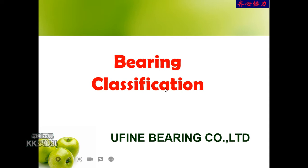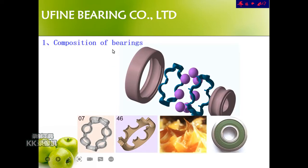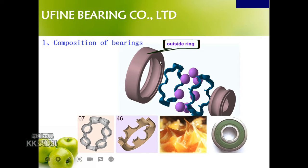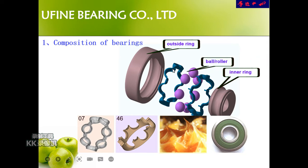Now let's check the bearing classification. First, the composition of bearings. As we can see from this image, I separate the bearings into four parts. First is the outside ring. Next is the inner ring. Then it's the ball or the roller — sometimes it is a roller and sometimes it is a ball, depending on the bearing type. And the last part is the cage, which is used to stop the balls from coming out.